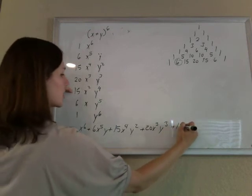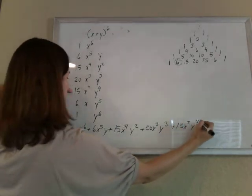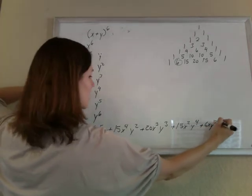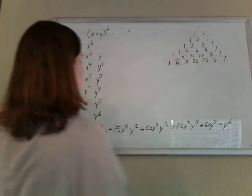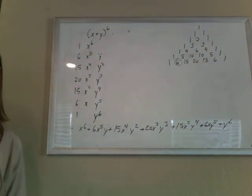Plus 15x squared y to the 4th plus 6x y to the 5th plus y to the 6th. That's that. That's it. Okay.